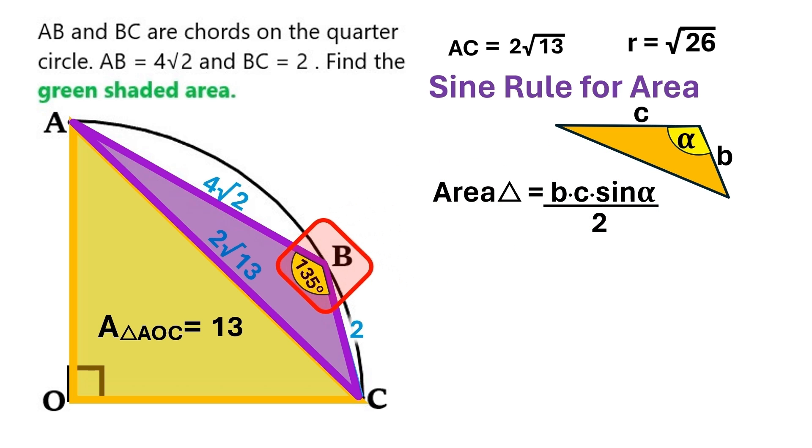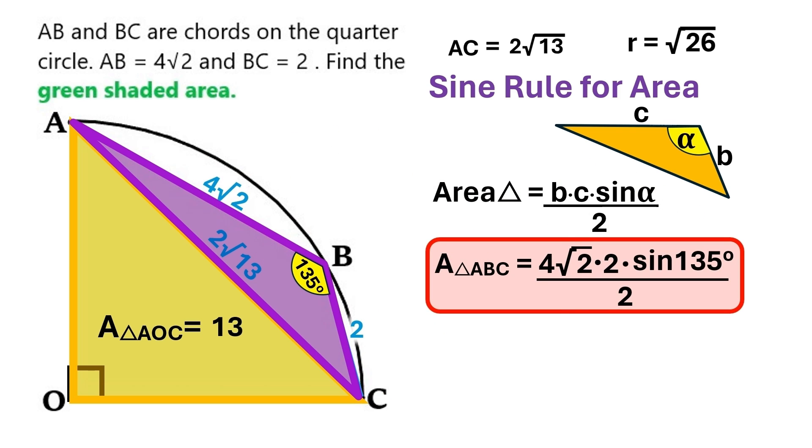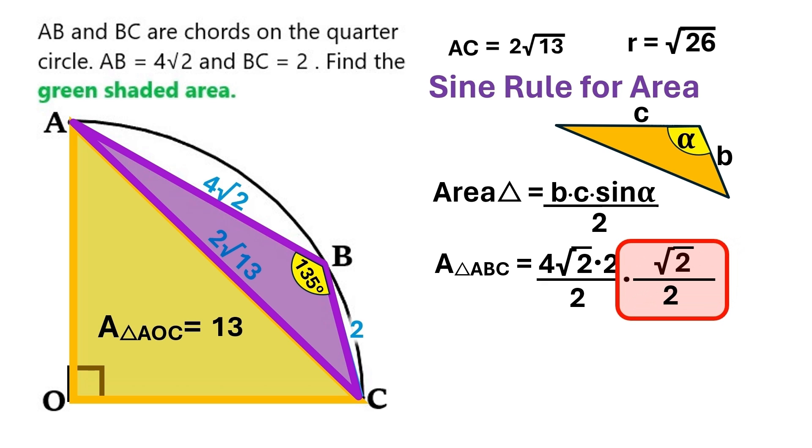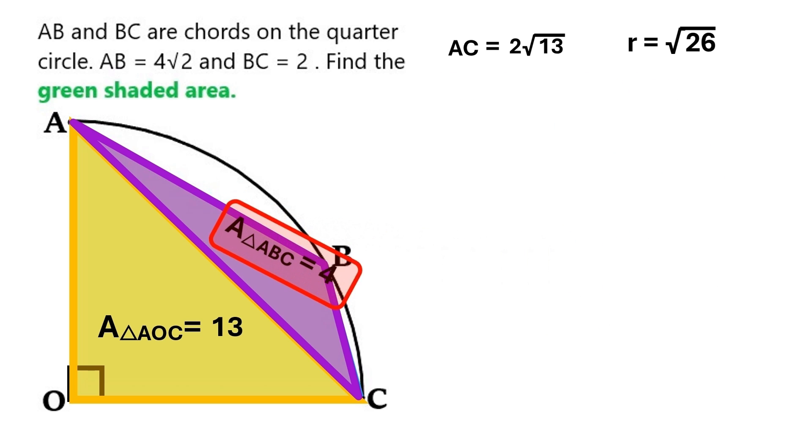In our purple triangle, we've got this 135 degree angle, and the adjacent sides are 4 times radical 2 and 2. So let's take all these values and combine them into this equation. Sine 135 has a fixed value, which is radical 2 over 2. And if we do the math, we find that all this stuff basically equals 4. So the area of triangle ABC is 4.